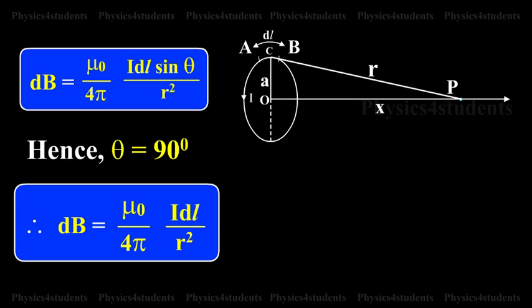The direction of DB is perpendicular to the current element IDL and CP. It is therefore along PR perpendicular to CP. Considering the diametrically opposite element A dash B dash, the magnitude of DB at P due to this element is the same as that for AB, but its direction is along PM.